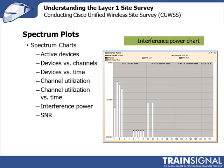For devices versus time, you could set it up for 24 hours and monitor the types of devices seen during the day and how they vary — again filterable by specific channel or the entire band. Channel utilization is a measure of duty cycle as it relates to channel activity, and channel utilization by time lets you select a time interval — such as 24 hours — to see how duty cycle changes over time.